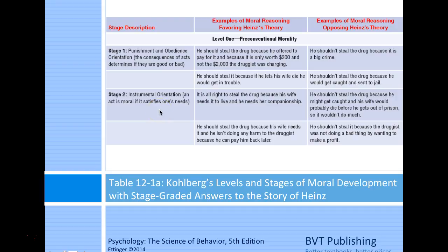Moving to stage two: it's alright to steal the drug because his wife needs it to live and he needs her companionship—that's meeting his own needs. Or he should steal it because his wife needs it and he isn't doing harm to the druggist since he can pay him back later. Opposing: he shouldn't steal because he might get caught and his wife would probably die before he gets out of prison; or the druggist was not doing a bad thing by wanting to make a profit. Both sides here are about meeting one's own needs.